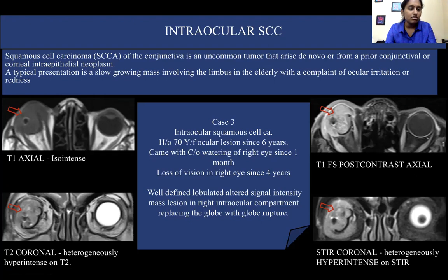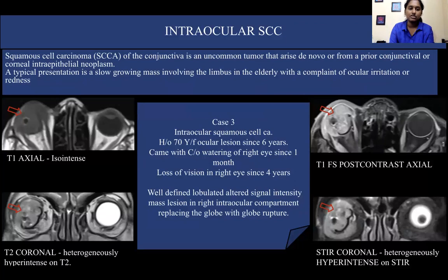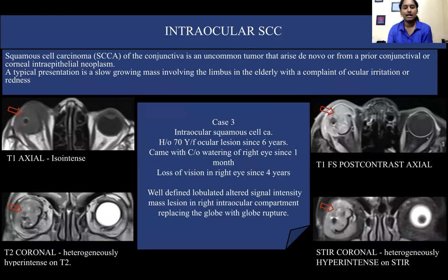A linear structure appearing hypo-intense on all sequences represents the margin of the ruptured globe. Squamous cell carcinoma of the conjunctiva is an uncommon tumor that arises either de novo or from a prior conjunctival or corneal intraepithelial neoplasm. A typical presentation is a slow-growing mass involving the limbus in the elderly with a complaint of ocular irritation or redness. Most commonly, squamous cell carcinoma would involve the eyelids, limbus region, or conjunctiva. Intraocular invasion is generally a rare condition, as seen in this case.